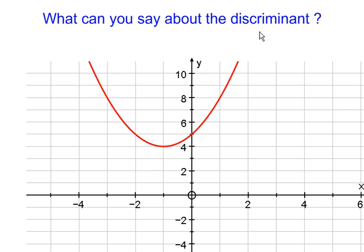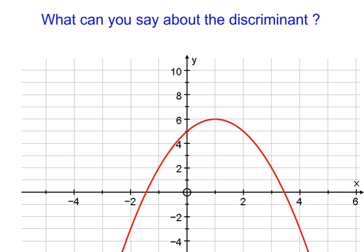What can you say about the discriminant for this graph? That graph does not intersect the x-axis at any point, so we know there are no roots, which means the discriminant must be negative — b squared minus 4ac should be less than 0. And for this other graph, clearly you can see there are two roots. If there are two roots, the discriminant b squared minus 4ac should be positive.